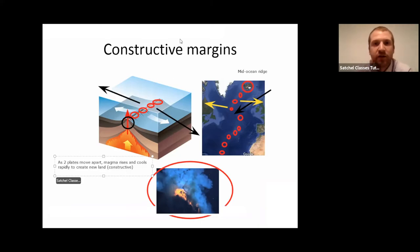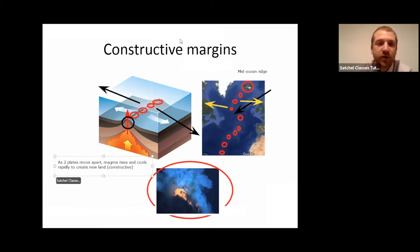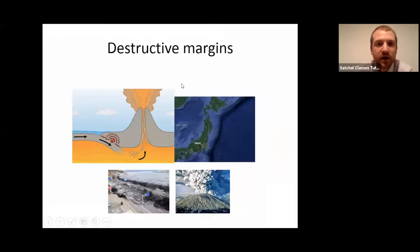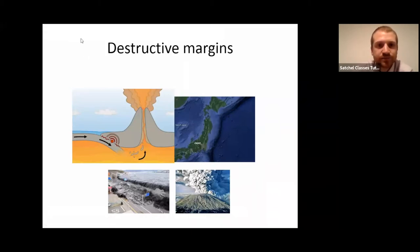This is our first boundary — new land is being made. Now the earth can't get bigger, so this process won't just keep expanding. Elsewhere something has to happen to counteract it. This takes us to our opposing force, which is our destructive margins. Here we've got two plates moving together.